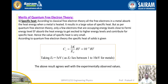Merits of quantum free electron theory. First case: specific heat. According to classical free electron theory, all the free electrons in a metal absorb heat energy when a metal is heated, resulting in a large value of specific heat. But as per quantum free electron theory, only a few electrons occupying energy levels close to the Fermi energy level absorb the heat energy to get excited and go to higher energy levels and contribute to specific heat. Hence, the value of specific heat is observed to be very small.